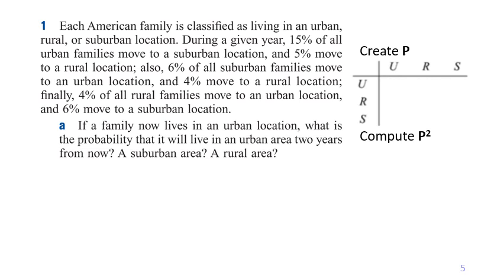From the problem, during a given year 15 percent of all urban families will move to a suburban location, and five percent move from urban to a rural location. Although the problem doesn't say anything about families who stay in the urban area, because the sum of a row must equal one, urban to urban is 0.8.